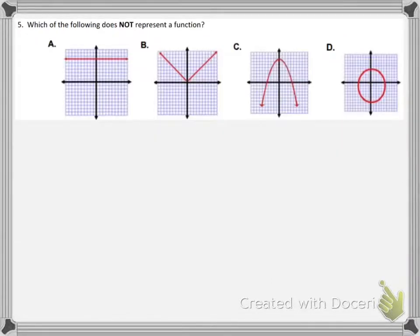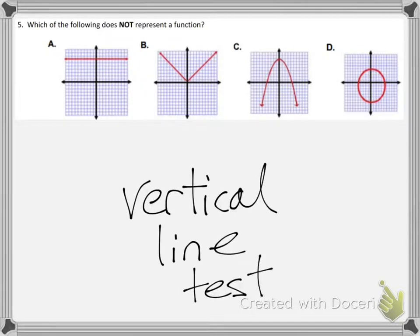Number 5: Which of the following does not represent a function? This is simply the vertical line test. You just drop a vertical line on the function, and if it intersects the function at two or more places, it is not a function. Number 1 is a function. The green line only crosses the red line once.